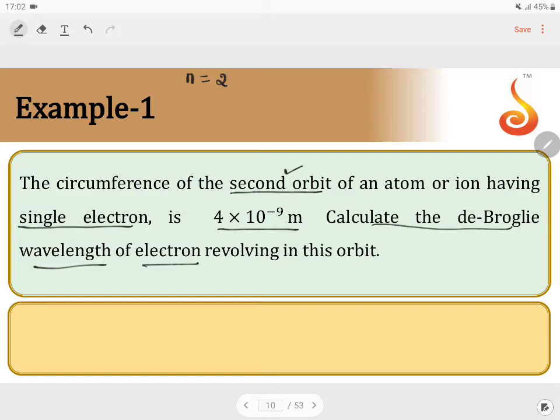Circumference is given. Circumference of an orbit will be 2 pi r. 2 pi r value is equal to 4 into 10 power minus 9 meters. We have to calculate the de Broglie wavelength.